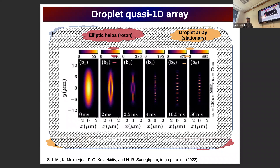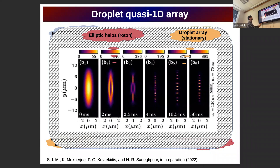The same phenomenology also occurs in the quasi-1D regime. Here you see density snapshots for an elongated dipolar Bose-Einstein condensate. We start from an elongated 1D Thomas-Fermi profile and observe the nucleation of elliptic halos due to roton modes, which essentially afterwards break up into a droplet array that again becomes stationary in the long-time evolution.